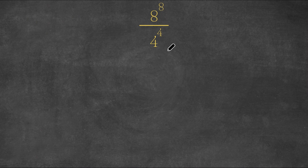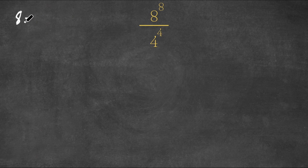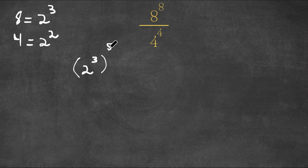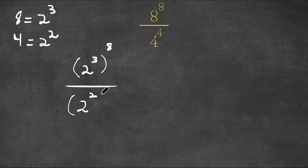What I'm going to do is make it so that both of these terms have the same base. Let's make both bases 2, because that is a common factor of these two numbers. So 8 is actually equal to 2 to the power of 3, and 4 is equal to 2 squared. So now I'm going to rewrite 8 as 2 to the power of 3, giving us 2 to the power of 3 to the power of 8, over 2 squared to the power of 4.